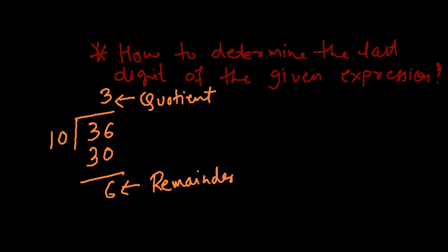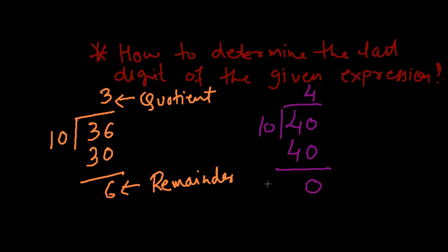Now let us choose another number, say 40, and divide it by 10. 10 goes into 40 four times, and the remainder is 0. Did you observe something? The remainder and the unit place are the same in both cases. So what we can conclude is: whenever you divide any number or any expression by 10, the final remainder is the same as the unit place of that expression.